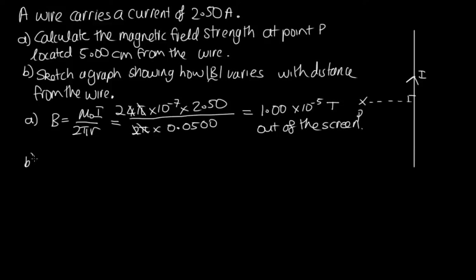Now part B asks us to sketch a graph. And so what we want to do is put the magnitude of B on this axis and the distance from the wire on this axis. And we can see that B is proportional to 1 over R. So this is going to have a hyperbola shape like this.